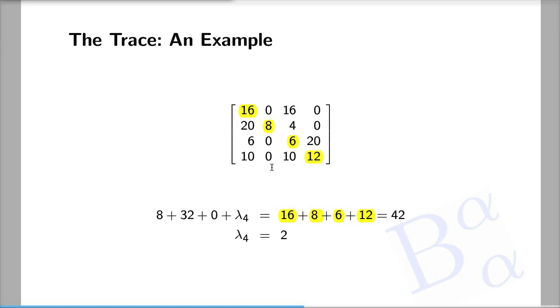One of the eigenvalues is eight because eight is the only non-zero entry in its column and it's on the diagonal. Therefore, eight is an eigenvalue, and (0, 1, 0, 0) is the corresponding eigenvector.